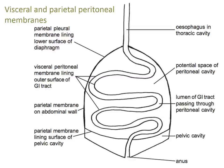Thinking about the gross anatomy of the gastrointestinal tract as it passes through the abdominal and pelvic cavity, we must understand the peritoneum — a thin membrane which lines the surface of the organs in the abdominal cavity and also lines the inner abdominal wall. The peritoneum immediately surrounding the organs is the visceral peritoneum, and the layer lining the abdominal wall is the parietal peritoneum.